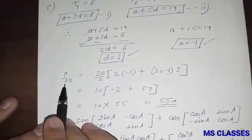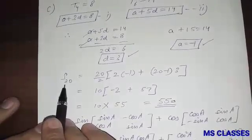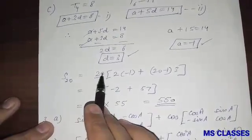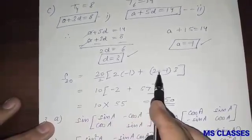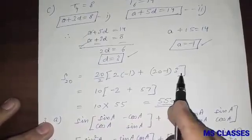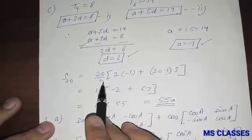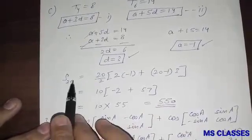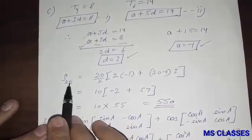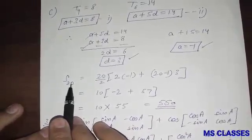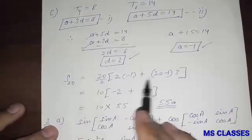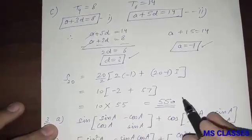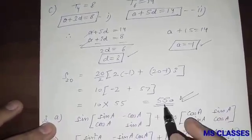For the sum of the first 20 terms, we use the formula S = n/2 × [2a + (n−1)d]. Always write the formula to earn full marks. Substituting n = 20, a = −1, and d = 3, we get S₂₀ = 550.